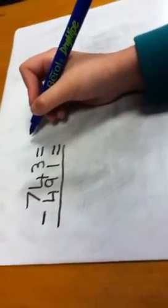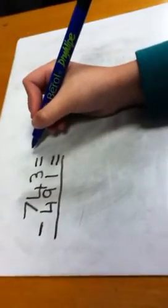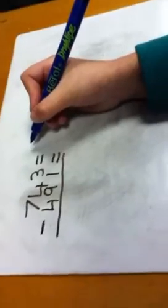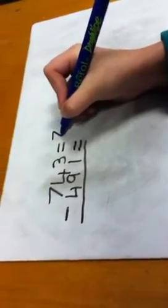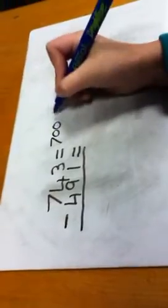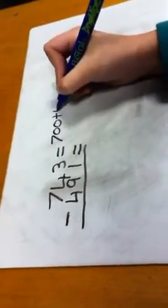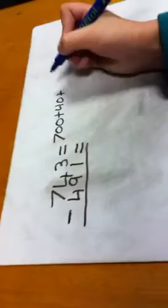We're going to show you how to subtract a three-digit number. First you partition it into groups: 700 plus 40 plus 3.